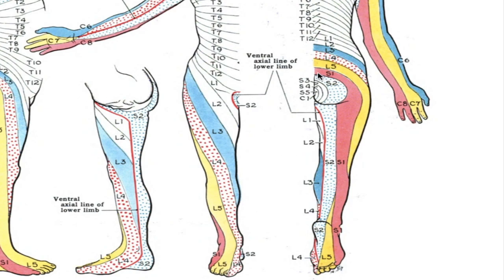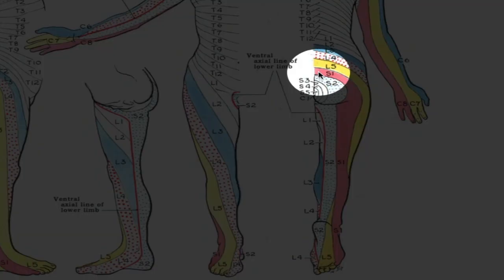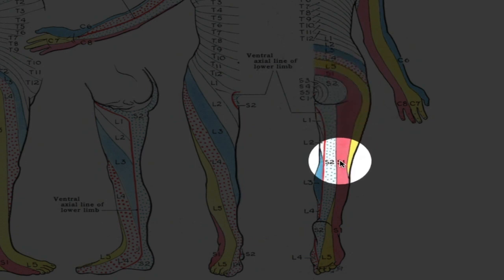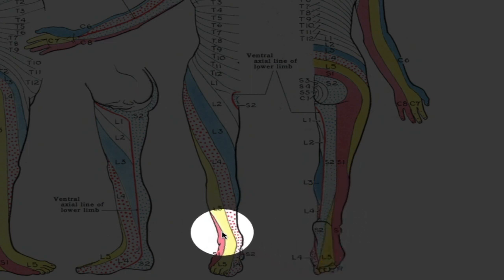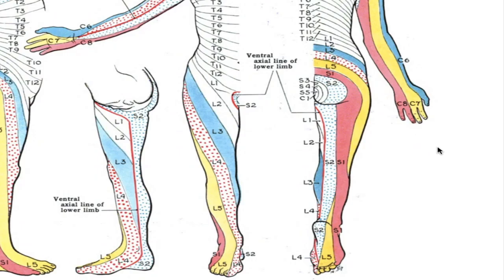And the S1 area, shaded in reddish, comes around the buttocks, into the hamstrings, and the outside of the leg, and goes into the little toe. And over here in the front, you can see it comes around and into the little toe. So this just gives you an idea of what might be causing the problem, depending on the sensations you're feeling and where on your legs you're feeling them.